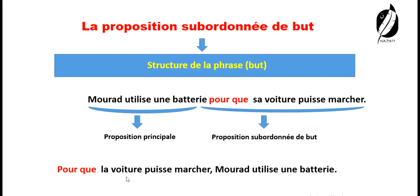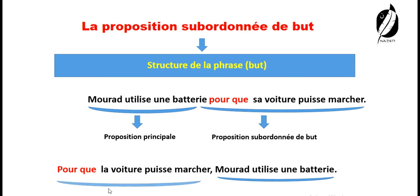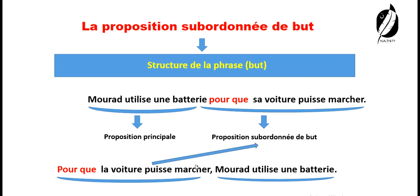Si je vous pose la question : où est la proposition principale dans la deuxième phrase ? Et où est la proposition subordonnée ? Pour que — c'est la proposition subordonnée. Alors, même si on a changé les places, chaque proposition garde son nom convenable.